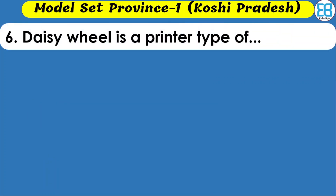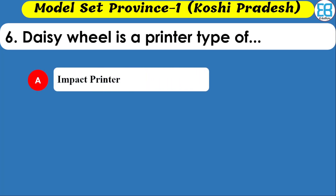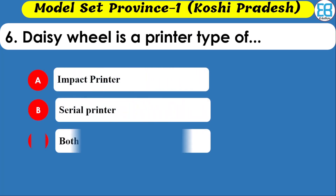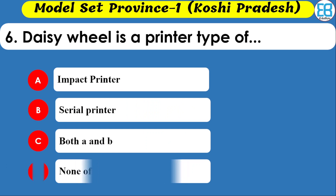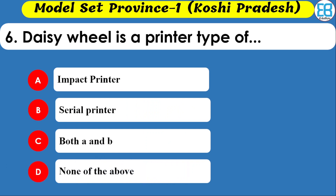What type of printer is a laser printer? The type of printer options are impact printer, serial printer, and both. The correct option is impact printer — a laser printer is a non-impact printer type, and the medical impact printer classification applies to dot matrix.